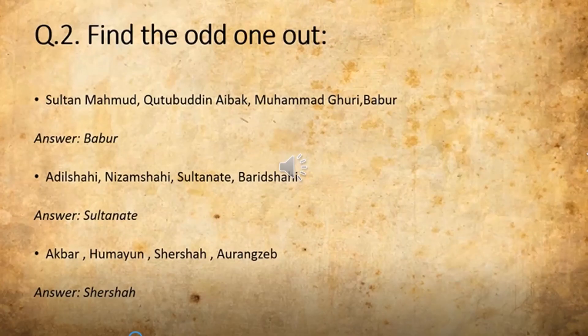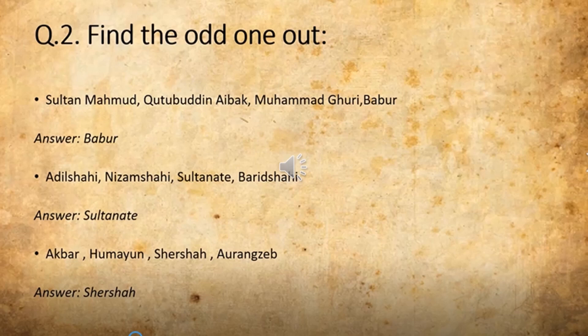Question number 2: Find the odd one out. In our last lecture, I discussed such questions and how they can be asked for your assessment. See the first one here: Sultan Mahmud, Aibak, Muhammad Ghuri, and Babur. The correct answer is Babur.